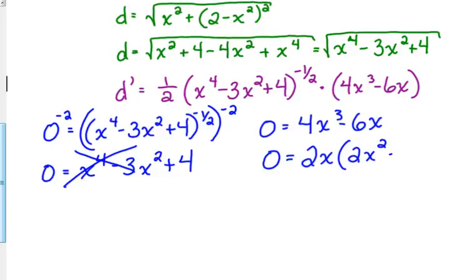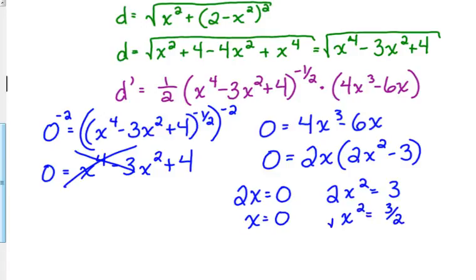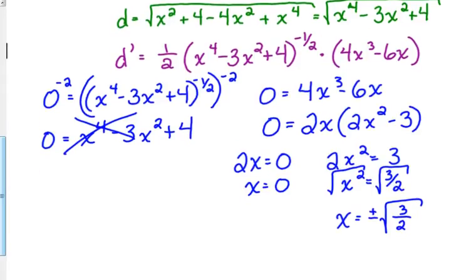Now this one is factorable. It has a GCF. Take out a 2 and take out an x. So when we do that, we're left with 2x(2x² - 3). So we've got 2x equals 0, and we have 2x² equals 3. So we get x equals 0. And we get x² equals 3/2. When we take the square root, x equals plus or minus square root of 3 over 2. Let's just leave it that way because AP never rationalizes.